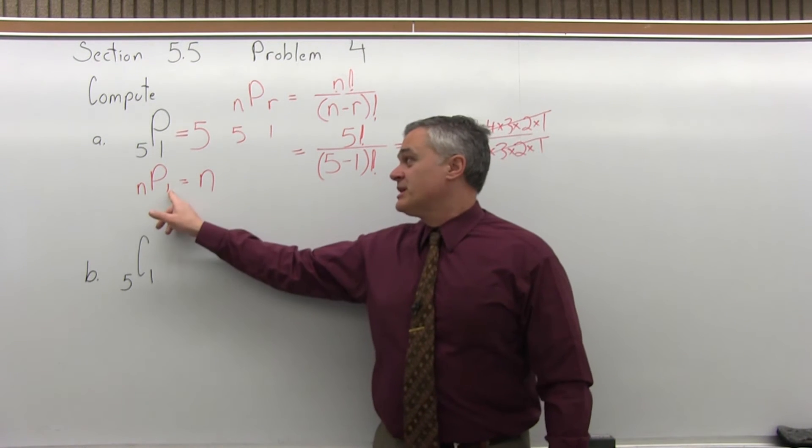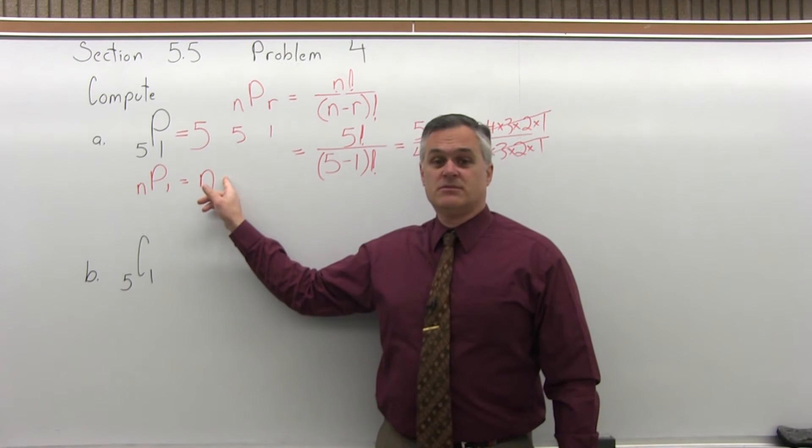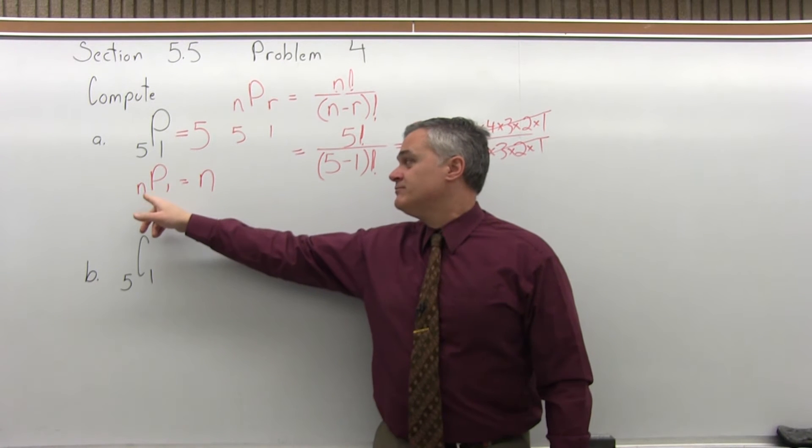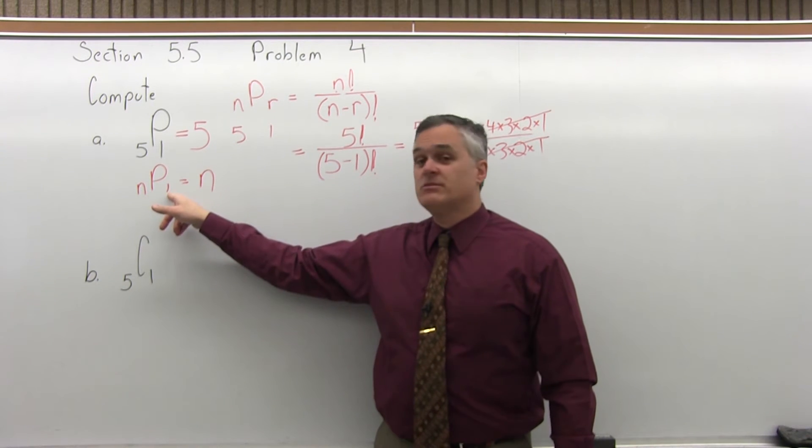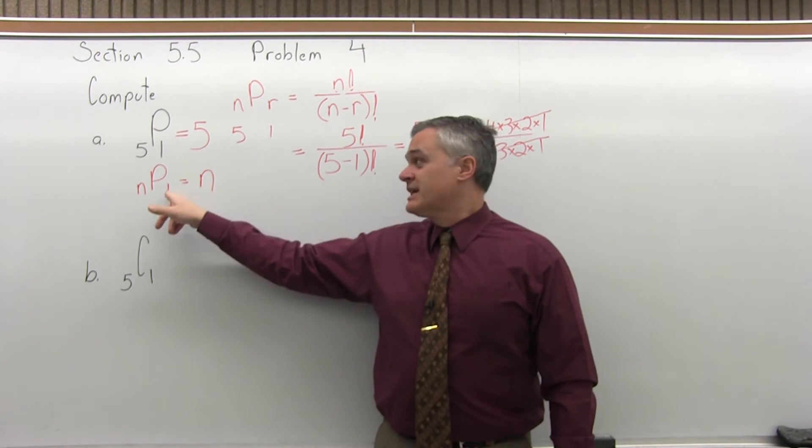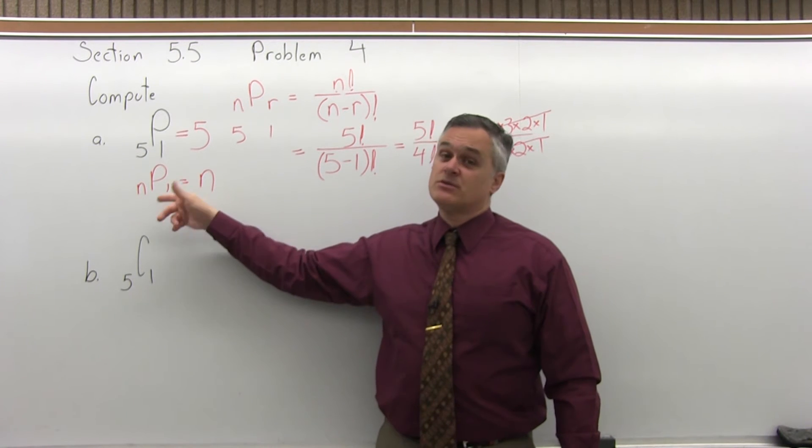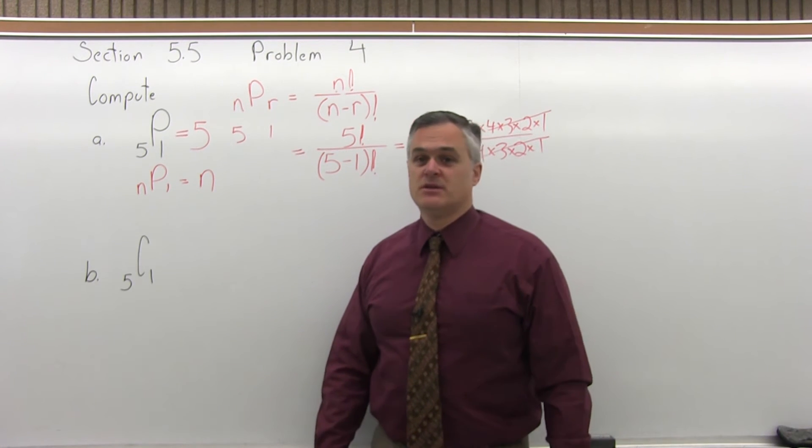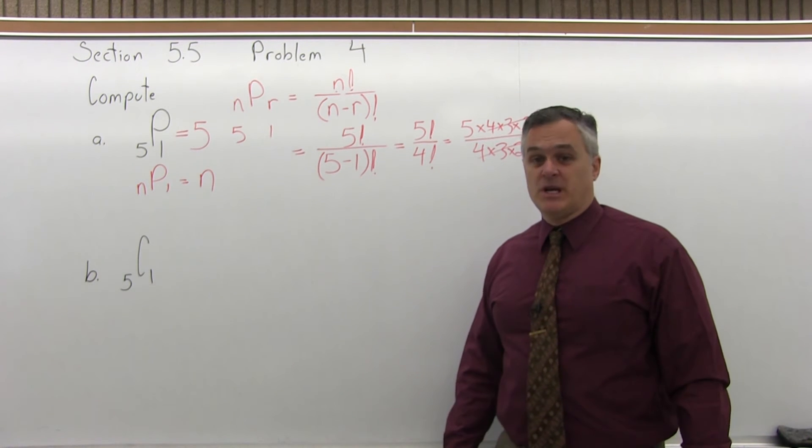So 72 permutation 1 will be 72. 12 permutation 1 will be 12. When the second number is 1, the answer is whatever the first number is. And you'll see we're going to get a similar result for the combination.